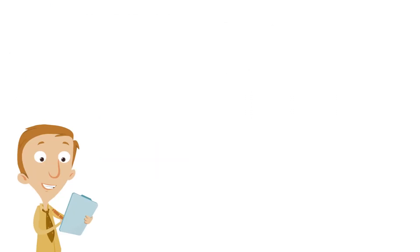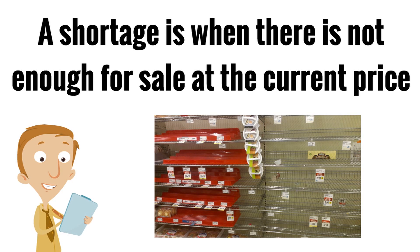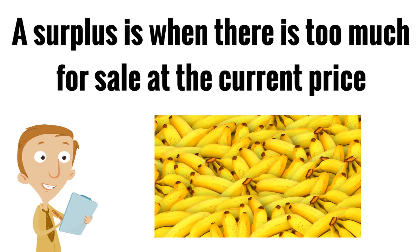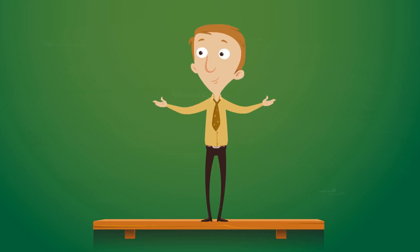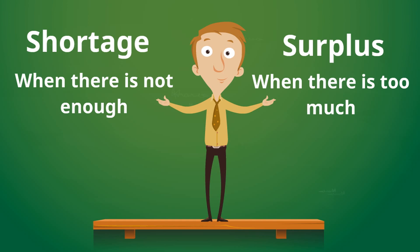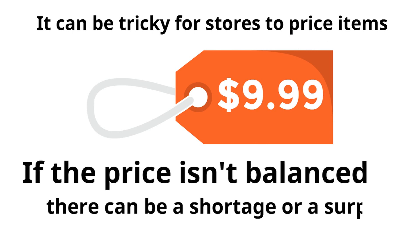To review: a shortage is when there is not enough for sale at the current price — just like the picture of the empty store shelves. A surplus is when there is too much for sale at the current price — like the bananas that need to get sold. An easy way to remember: shortage means not enough, surplus means too much. It can be tricky for stores to price items — if the price isn't balanced, there can be a shortage or a surplus.